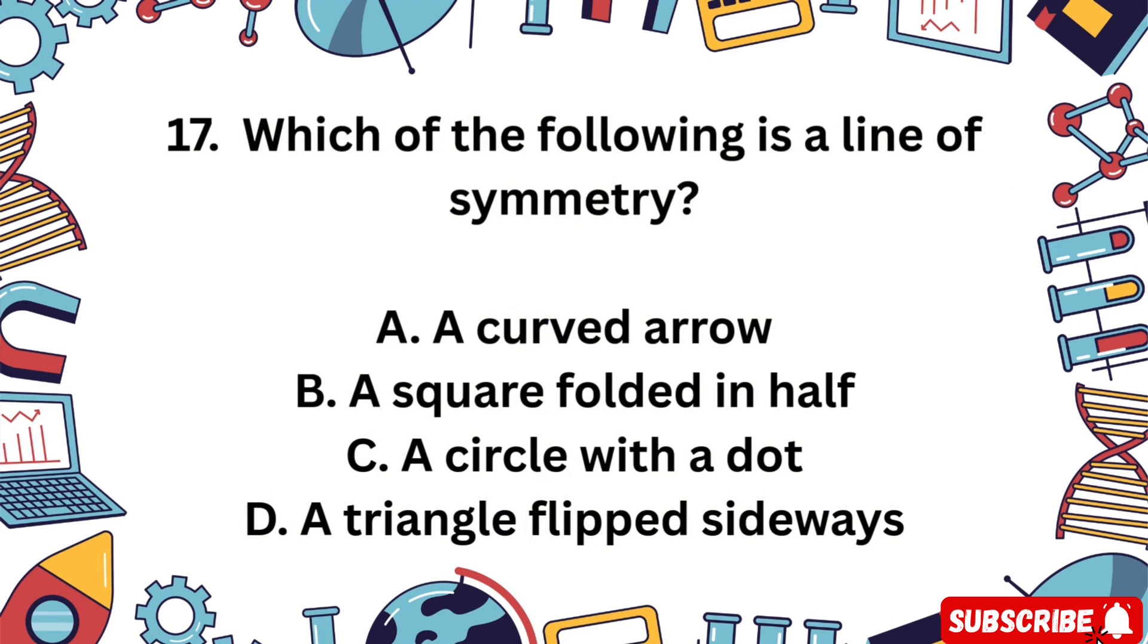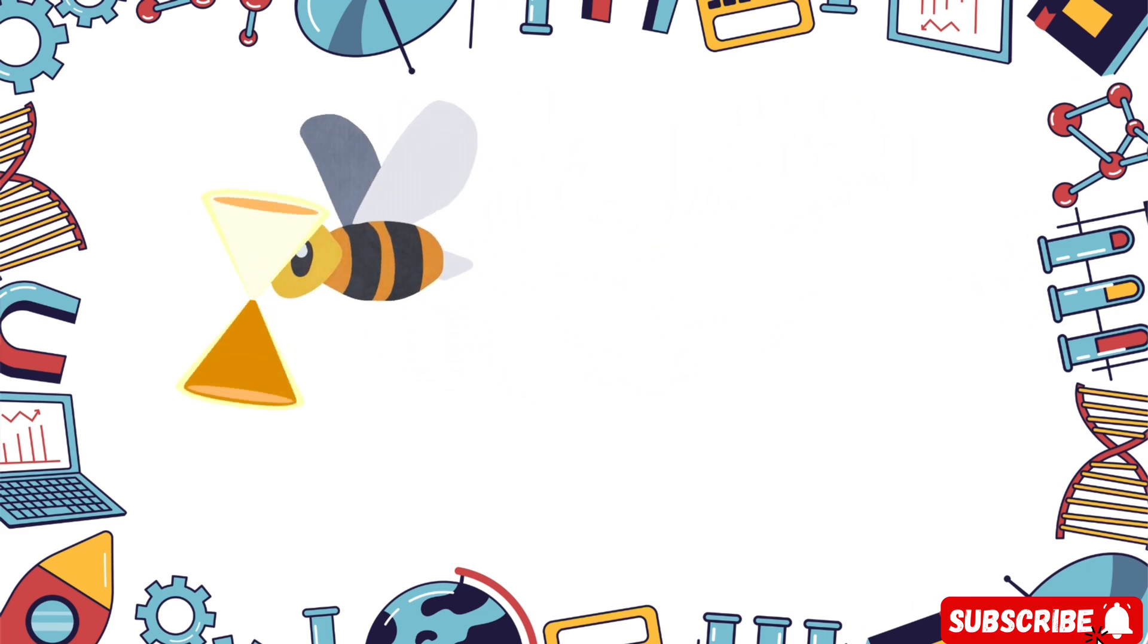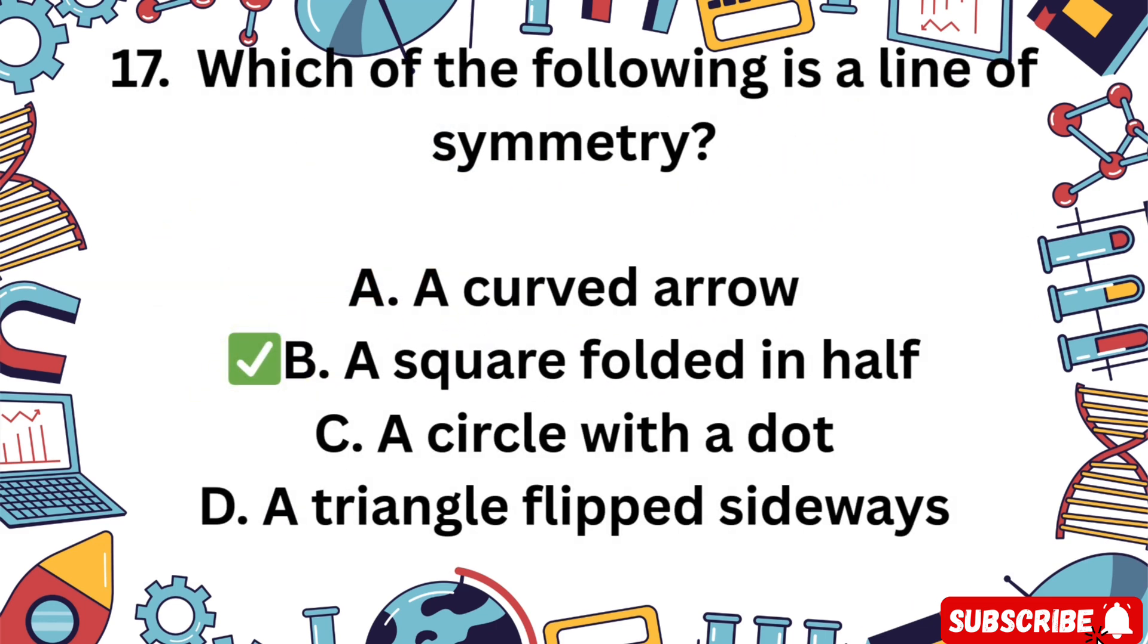Question 17. Which of the following shows a line of symmetry? A a curved arrow, B a square folded in half, C a circle with a dot in it, D a triangle flipped sideways. Look for balance. You have 10 seconds. The correct answer is B a square folded in half. It has a line of symmetry.